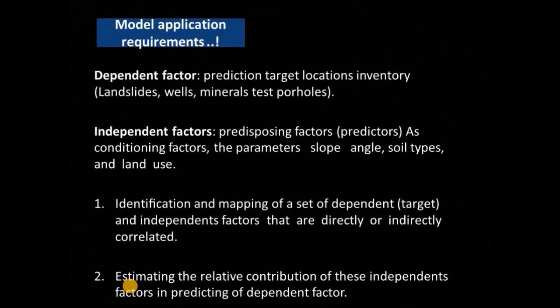Since today we are focusing on the bivariate statistical methods, and even in the multivariate, there will be two main factors that we need to derive or prepare within our dataset. First will be the dependent factor or the target — commonly it's a location inventory, either landslides, groundwater, minerals, or test boreholes. While the independent factors, which are the predictors or conditioning factors, can include slope angle, soil types, land use, etc., based on your application type.